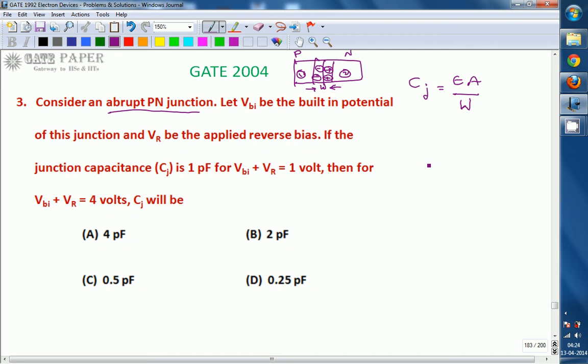And we know that W equals square root of 2 epsilon V by QND. This is for P plus N junction.